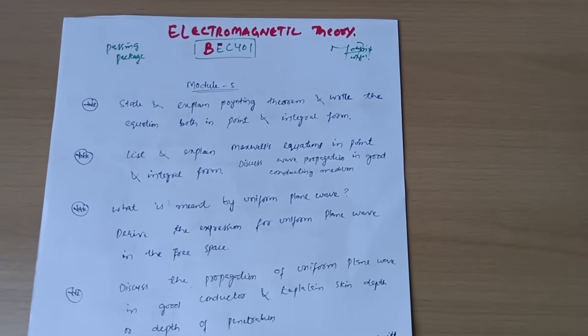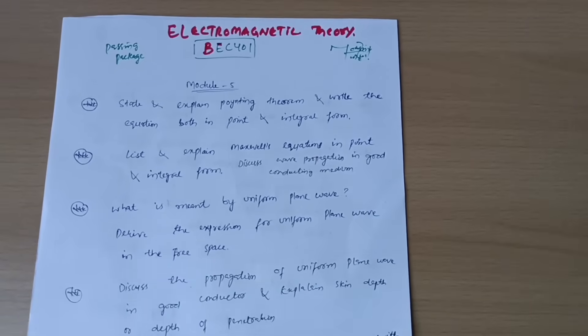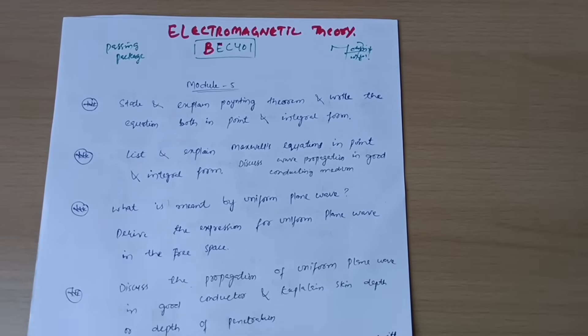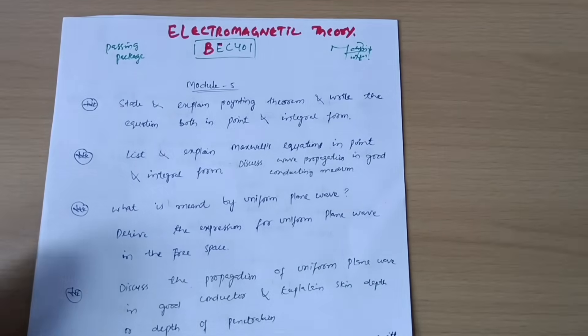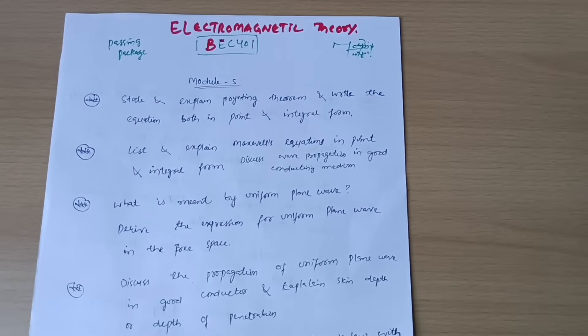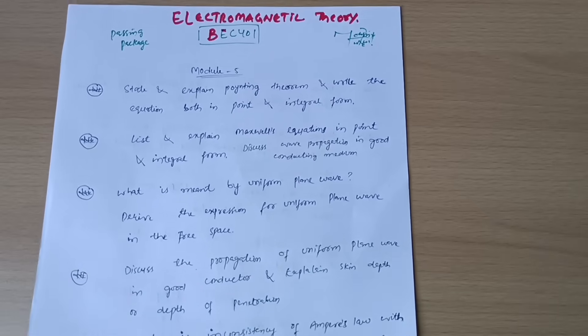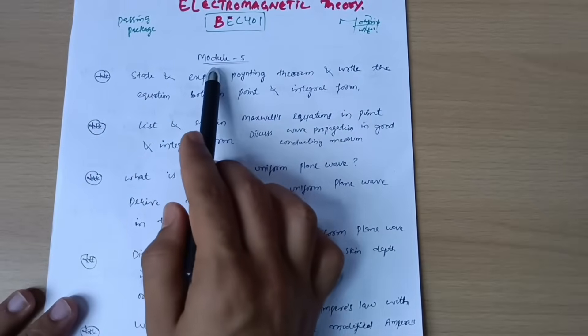This is the subject electromagnetic theory, which I call advanced physics. There are lots of derivations here. It is purely physics topics. You should not show negligence towards the subject. It is very difficult for students to remember all the derivations, so the more you practice, the more you remember the derivation part. So let us start the important questions module-wise so that you can feel comfortable in the subject.